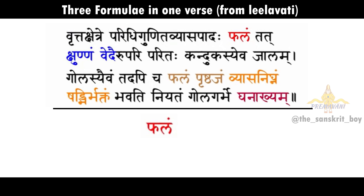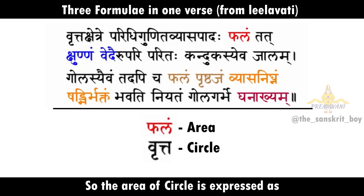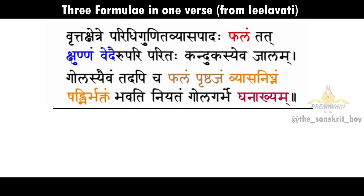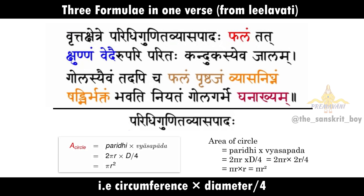Palaam here means the area and vritta is circle, so the area of circle is expressed as circumference into diameter by 4, and the answer is pi r square.